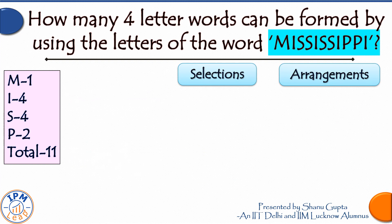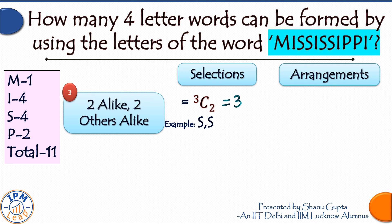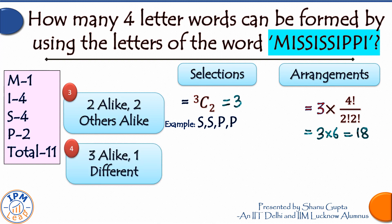Case 3: two letters alike and two others alike. We have three letters that repeat, so we select any two of them in 3C2 ways. Suppose we select S and P; we draw two of each, giving sample SSPP. This sample can be arranged in 4! / (2! × 2!) = 6 ways. Therefore, selection and arrangement under this case = 3 × 6 = 18 ways.